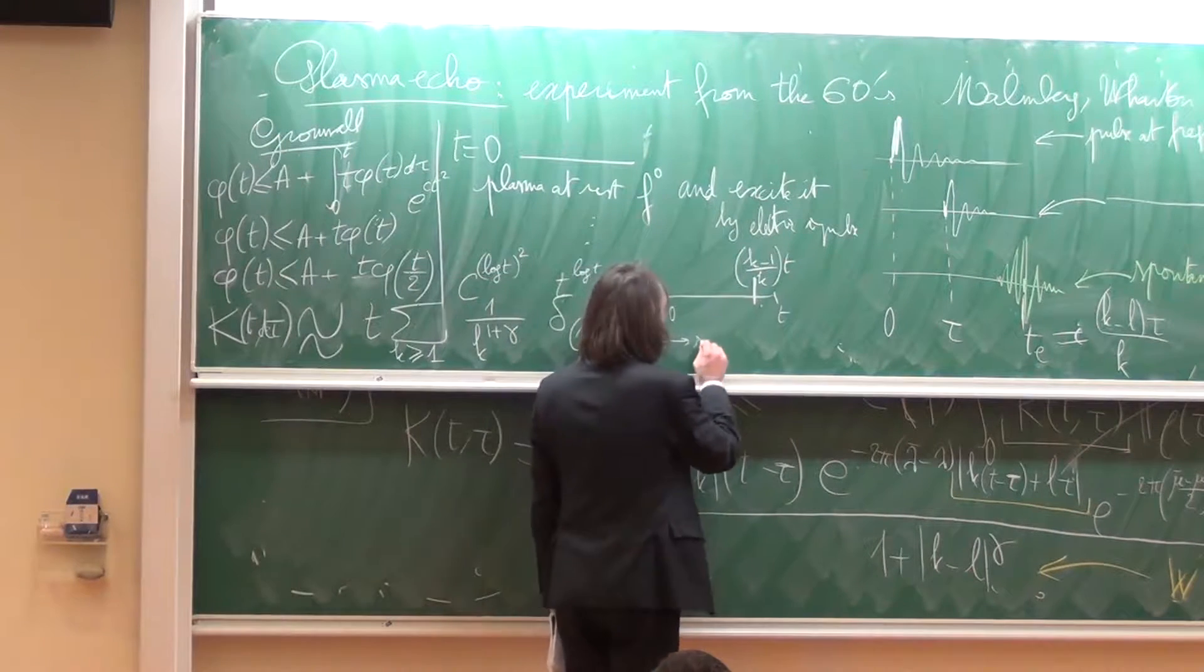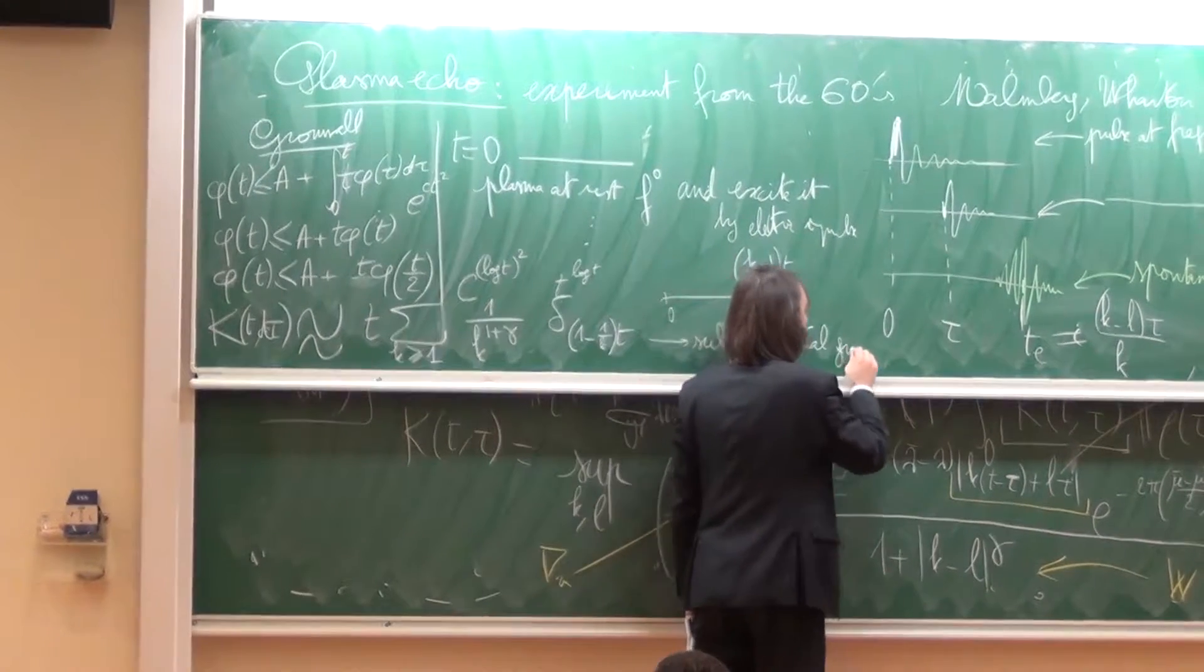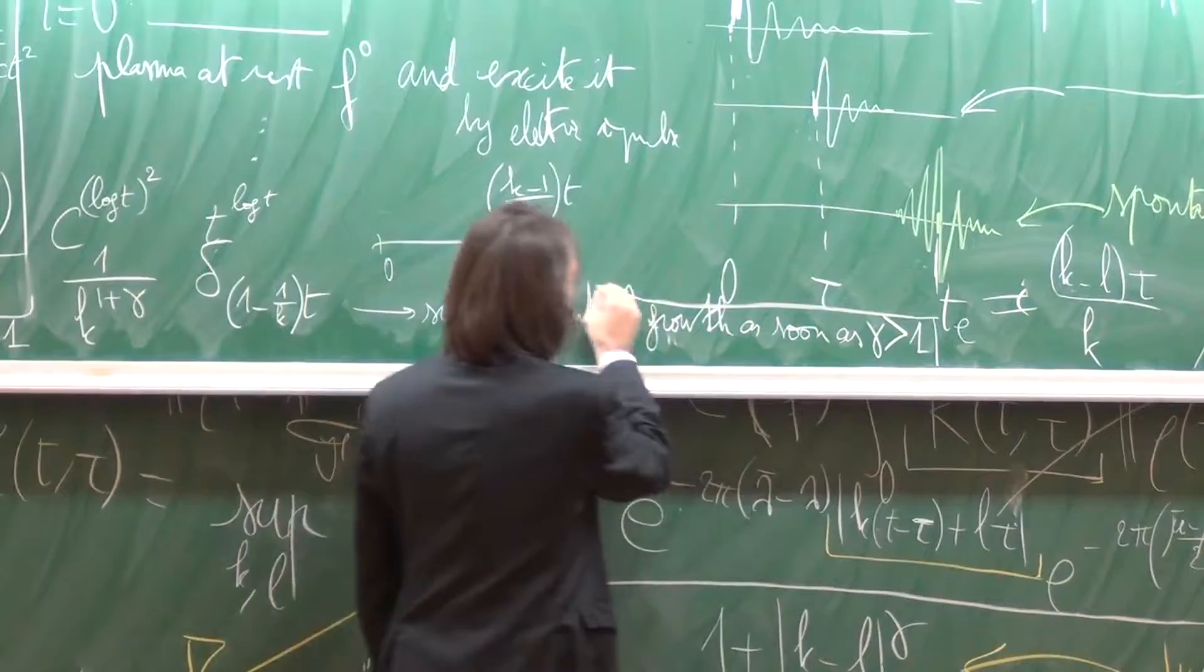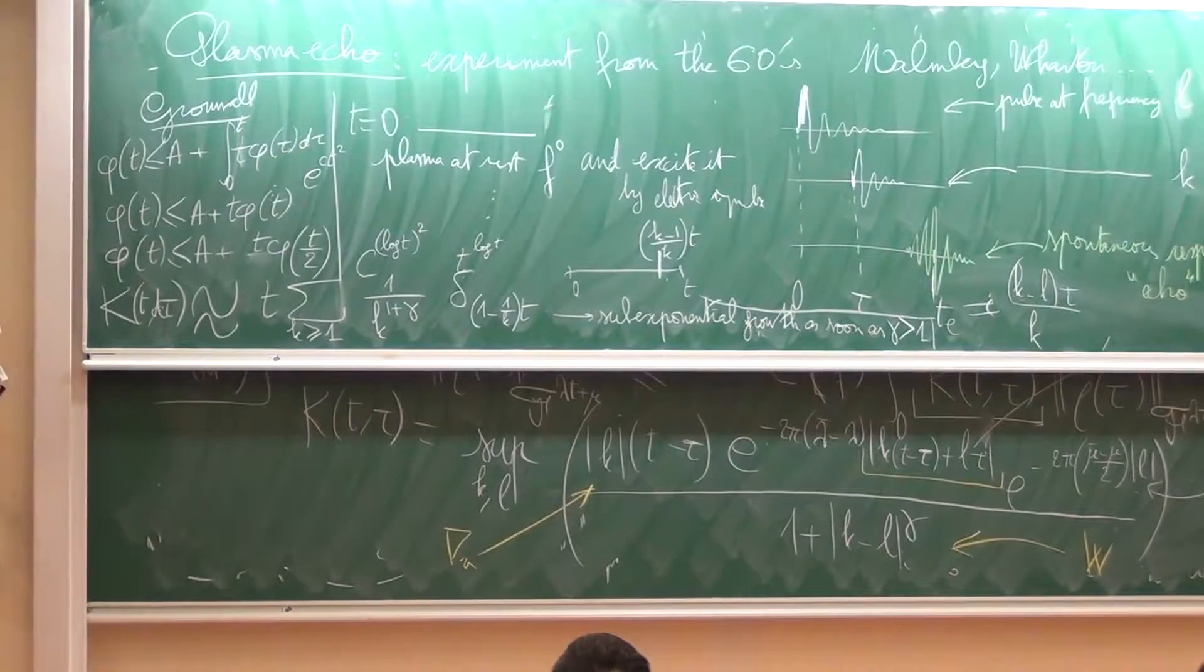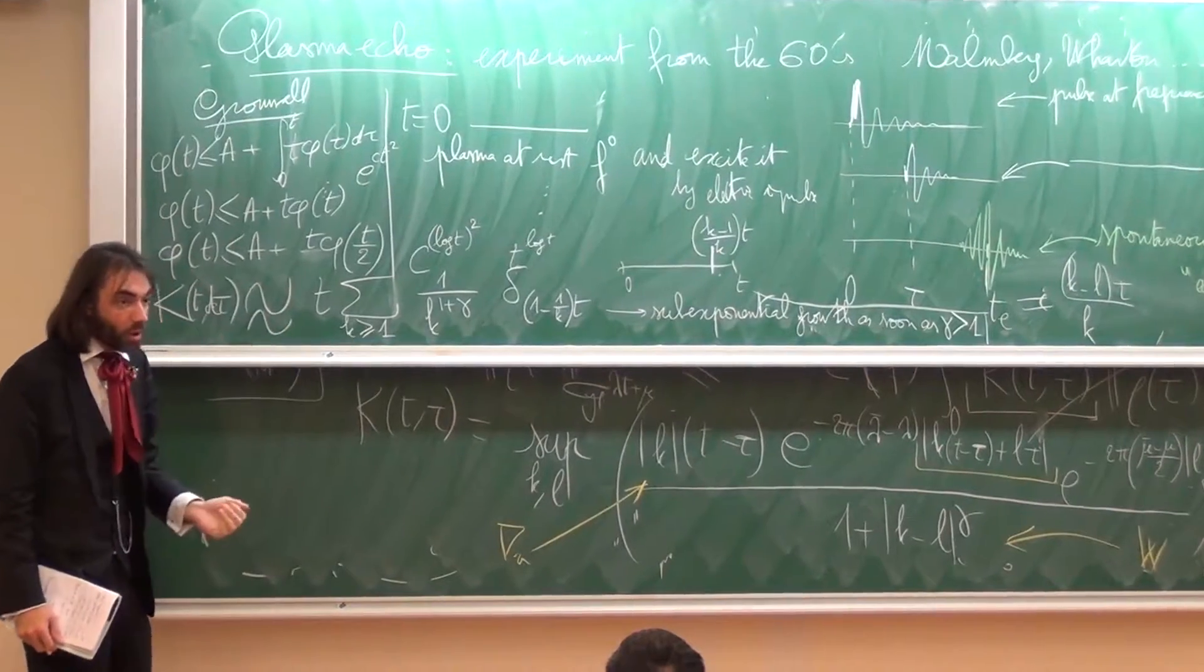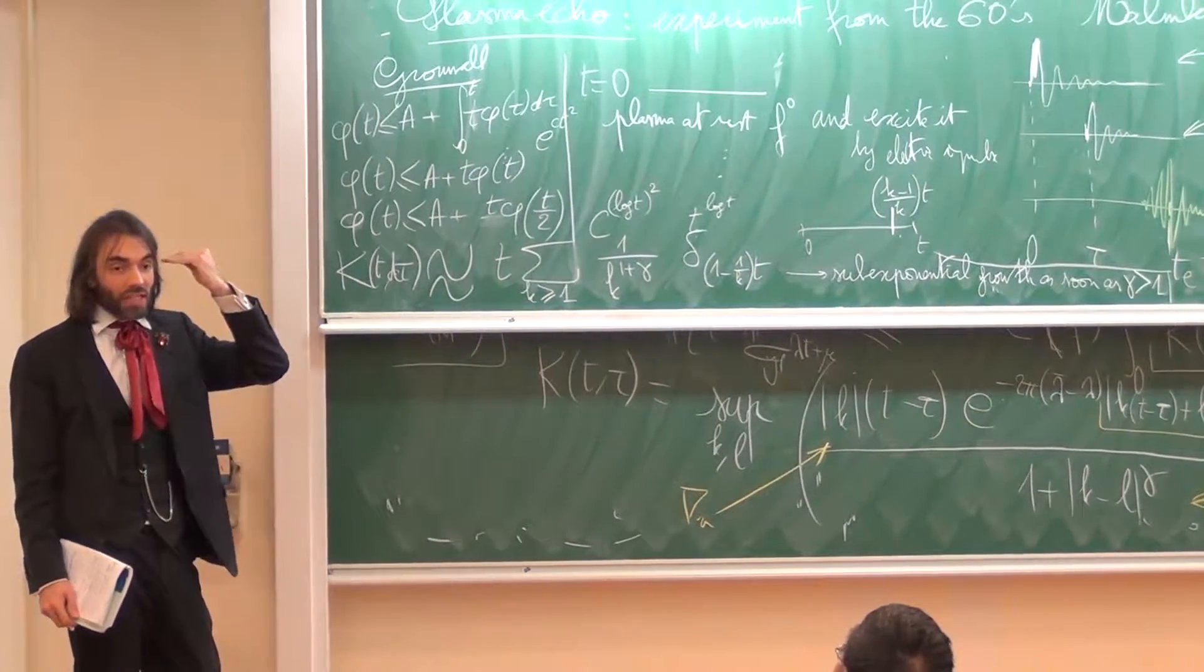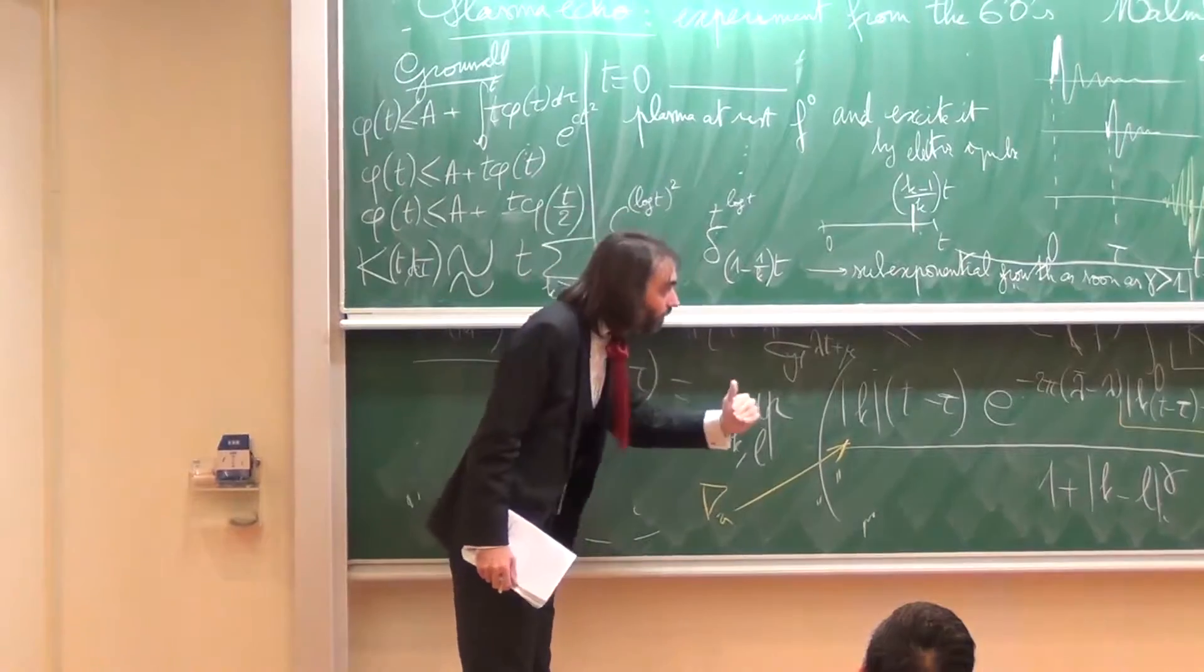You find that the growth is sub-exponential growth as soon as gamma is strictly bigger than 1. So the good news is, as soon as my kernel decays a little bit, the expected growth from the Gronwall is sub-exponential. This is the expected nonlinear growth. But then I can kill this with the exponential decay coming from the linear problem. And so the nonlinear interaction will be killed with the linear.